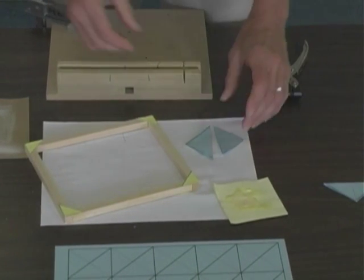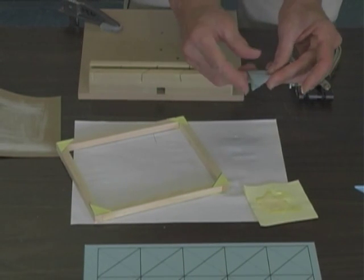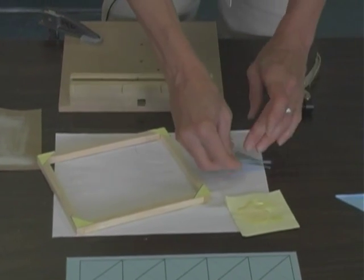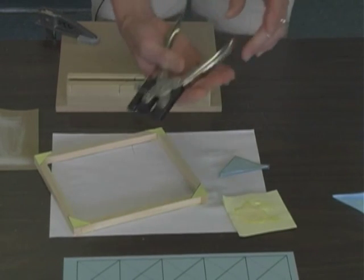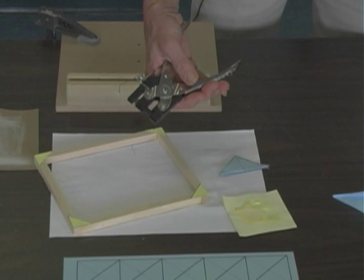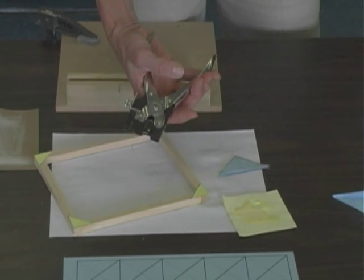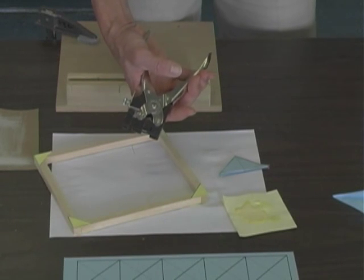Once we have that, we then take our glued two gussets, put them together, and we take our hole punch. Now this is a heavy-duty hole punch, very good for going through not just paper, but also very thin wood such as tongue depressors and popsicle sticks.